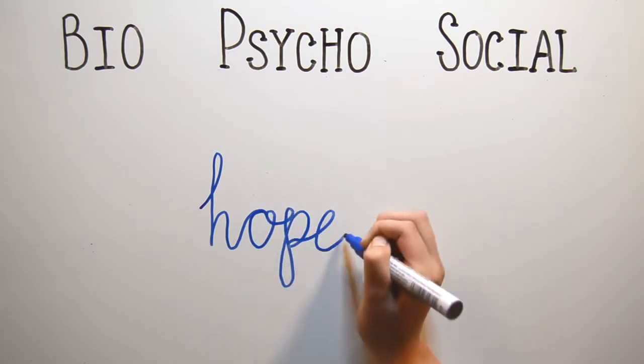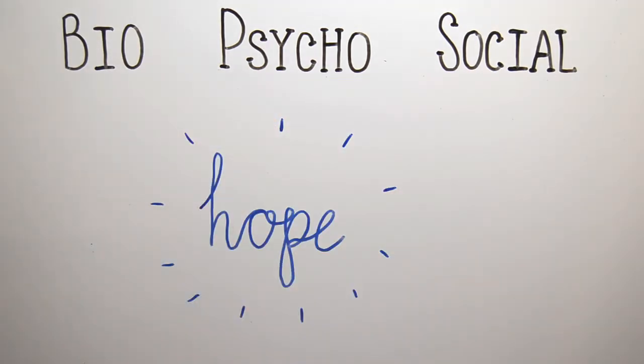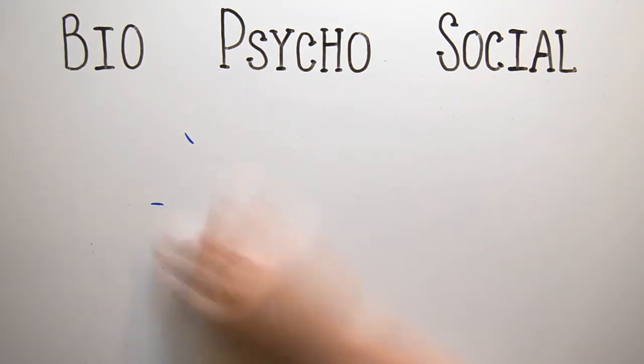The good news is, there is hope. There are lots of treatment options available for people with anorexia. And even though we're not saying it's easy, recovery is possible. Helping somebody to recover from anorexia isn't as simple as just getting food into their bodies. As you can see, we need to think about how we can address biological, psychological, social, and cultural factors. What might this look like?